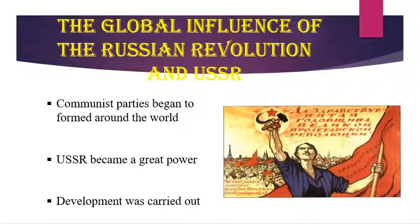The global influence of the Russian Revolution and the USSR. Some points on global influence: First, though the Bolsheviks were criticized for the way they worked, they were popular across the world. Second, communist parties began to be formed around the world. Socialism received a global presence and admiration. The USSR became a great power with the development of industries and agriculture, though this development was carried out with repression. Finally, socialist ideas were rethought around the world. These are the influences of the Russian Revolution on the world.